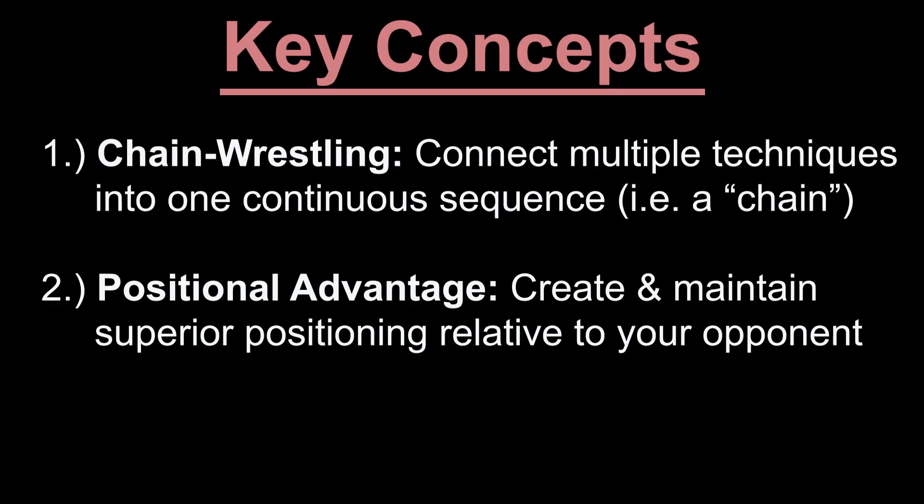The two key concepts that this clip illustrates are chain wrestling and positional advantage. Chain wrestling occurs when multiple techniques are connected in one continuous sequence until a desired result — usually a takedown — is reached. A positional advantage occurs when you obtain superior positioning relative to your opponent's positioning. The goal in wrestling is to create a positional advantage by putting yourself in strong positioning, putting your opponent in weak positioning, or some combination of the two, and maintain this advantage as long as possible.